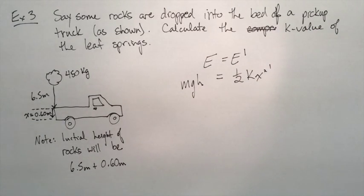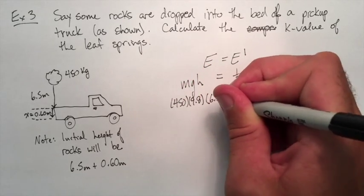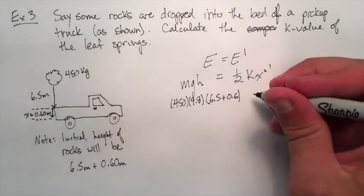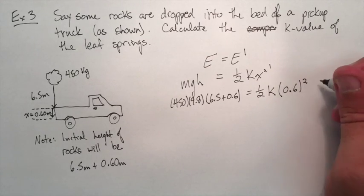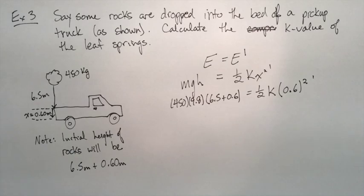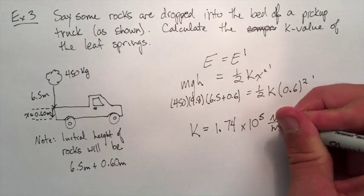So conservation of energy. We have gravitational potential to start and only spring energy to finish. We put in our values and try and calculate K. After it's all said and done we find that K has a value of 1.74 times 10 to the 5 newtons per meter.